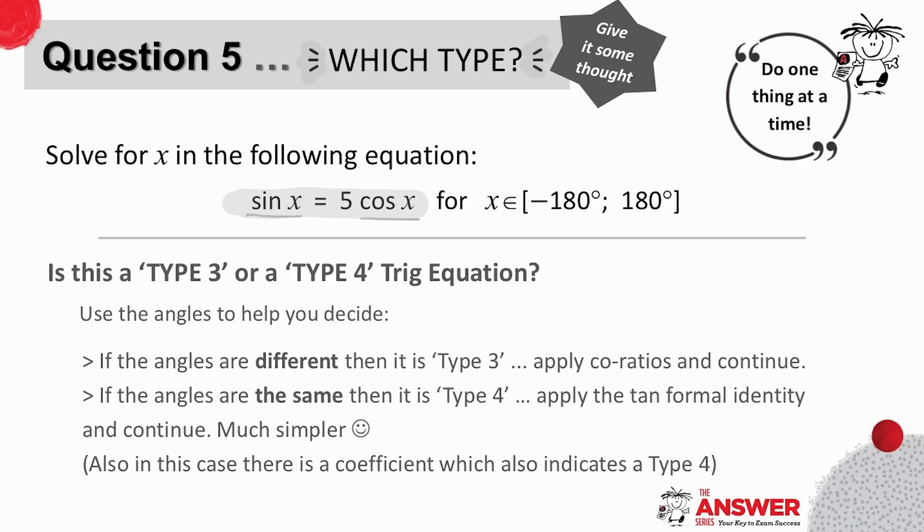So then, the question is, is it type 3 or type 4? Even though these are co-ratios, the important thing to notice is that their angles are the same. And when the angles are the same, then it's a type 4 equation where you have to apply trig identities first before being able to solve.